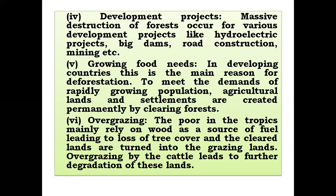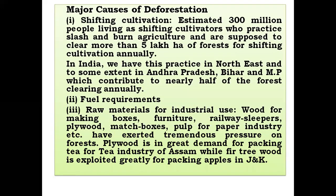Shifting cultivation is practiced in India's Northeast and to some extent in Andhra Pradesh, Bihar, and Madhya Pradesh, contributing to nearly half of the forest clearing annually. This slash-and-burn agriculture is supposed to be clearing more than five lakh hectares of forests for shifting cultivation annually.